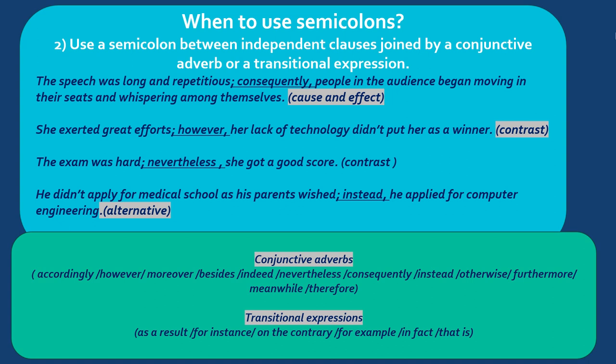Second example: 'She exerted great efforts; however, her lack of technology didn't put her as a winner.' There is a contrast here — the first clause is positive and 'however' signals a shift to a negative clause. Third example: 'The exam was hard; nevertheless, she got a good score.' This is also a contrast. Usually, 'however' is followed by the negative clause and 'nevertheless' is followed by the positive one.